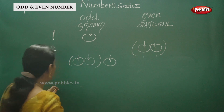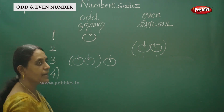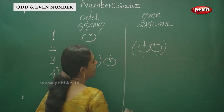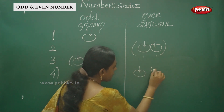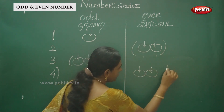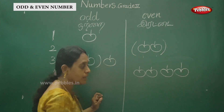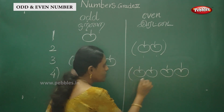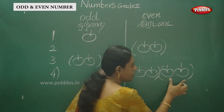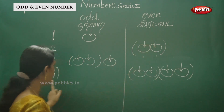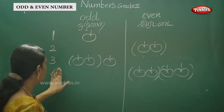And four. Four forms pairs. This is one group, this is one group, this is one group, this is one group — all grouped evenly. This is even number.